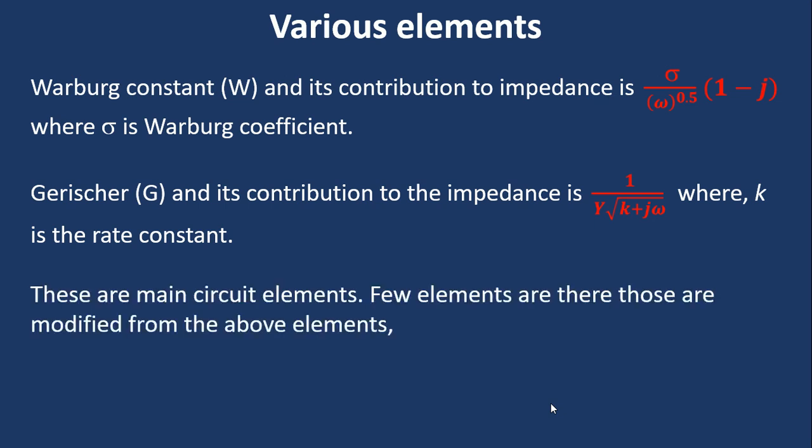But there are few more elements. So that we discussed above. So these elements are the main elements, main circuit elements in impedance spectroscopy. Above those elements there are few elements, those are modified from the above elements, for example, modified inductor, modified Gerischer, etc.